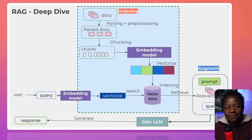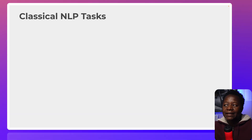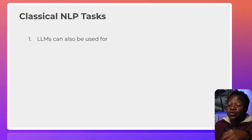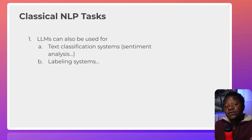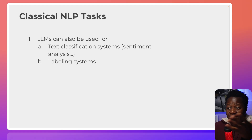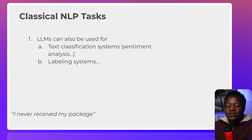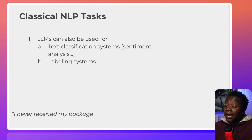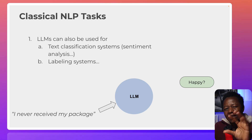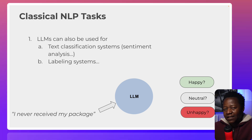We can also include classical NLP tasks — natural language processing. Large language models are really good at classifying things, like classifying text, so there's a way to take a large language model and create labeling systems and more. For example, imagine you work at a shipping company and receive the message 'I never received my package.' You can build a system to analyze that message and determine the sentiment — is it happy, neutral, or unhappy? Large language models are really good at that.